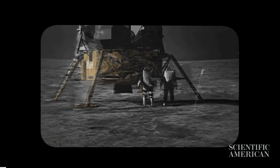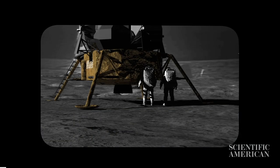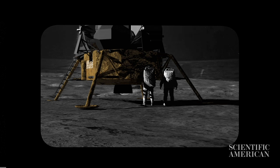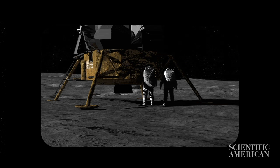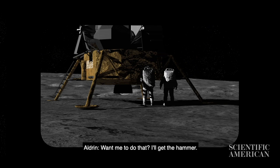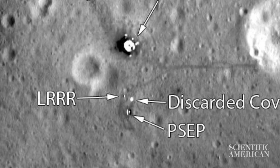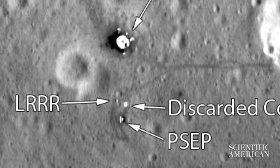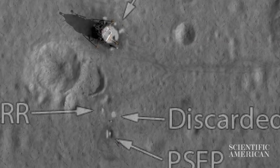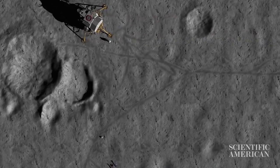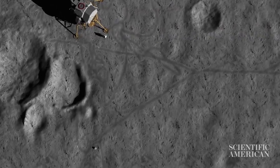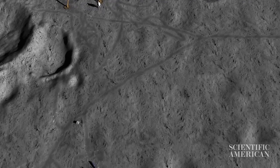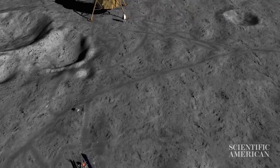Now three-dimensional computer models, based on recent satellite imagery, can recreate each step of the mission and the terrain it covered. Based on a 2012 photograph of the landing site from the Lunar Reconnaissance Orbiter, a height map of the surface shows the contours of the moon where Neil Armstrong and Buzz Aldrin traveled.